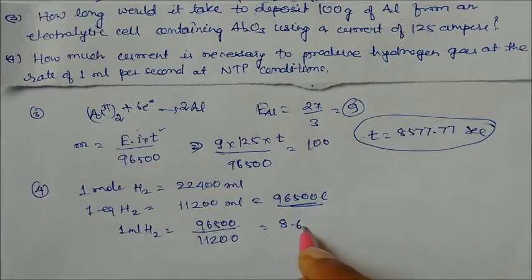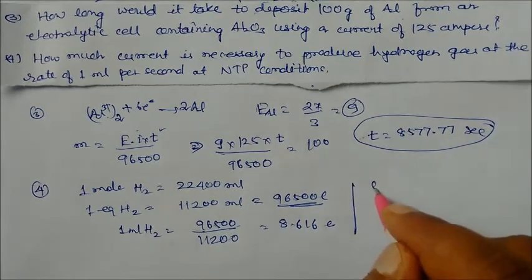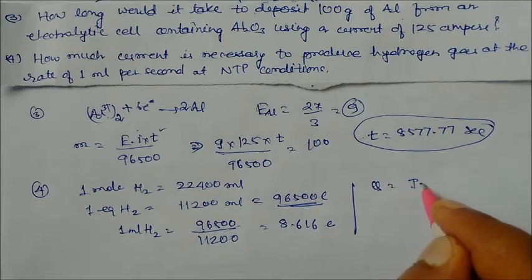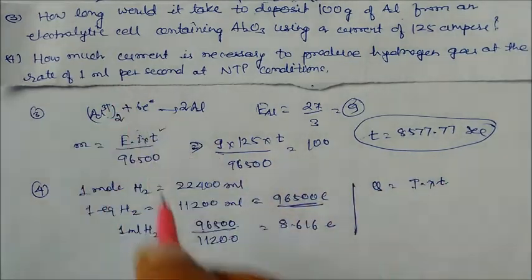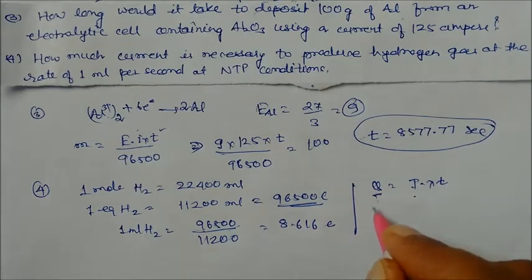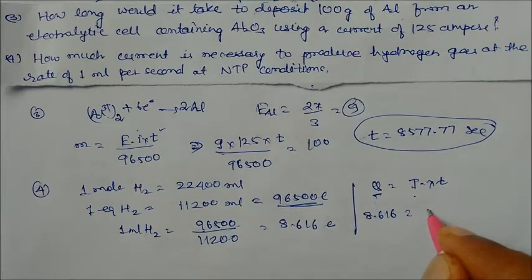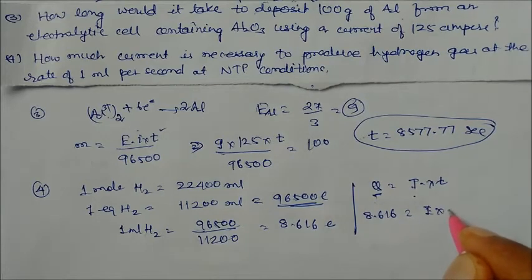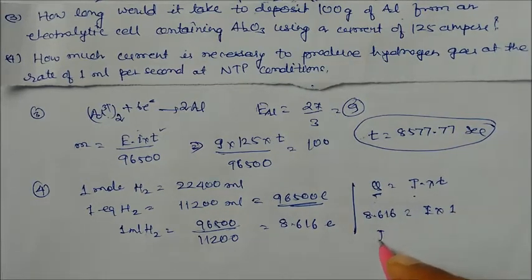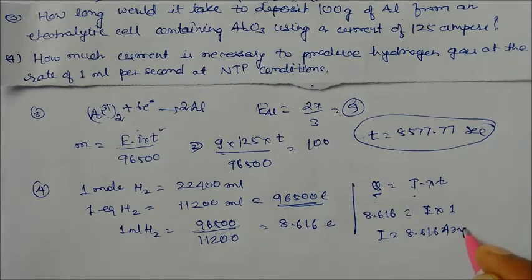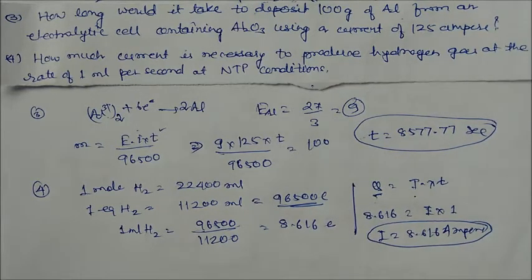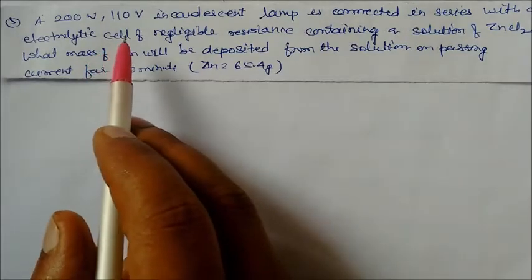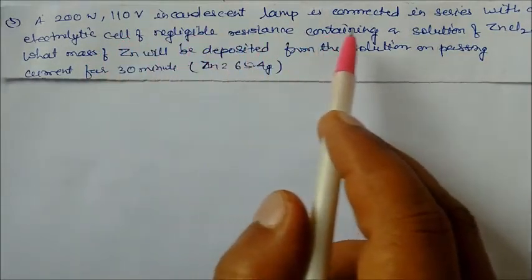We get 8.616 coulombs per ml. Now q = i × t. Since they ask for current, q = 8.616 and time = 1 second, so i = 8.616 ampere. This is our answer.